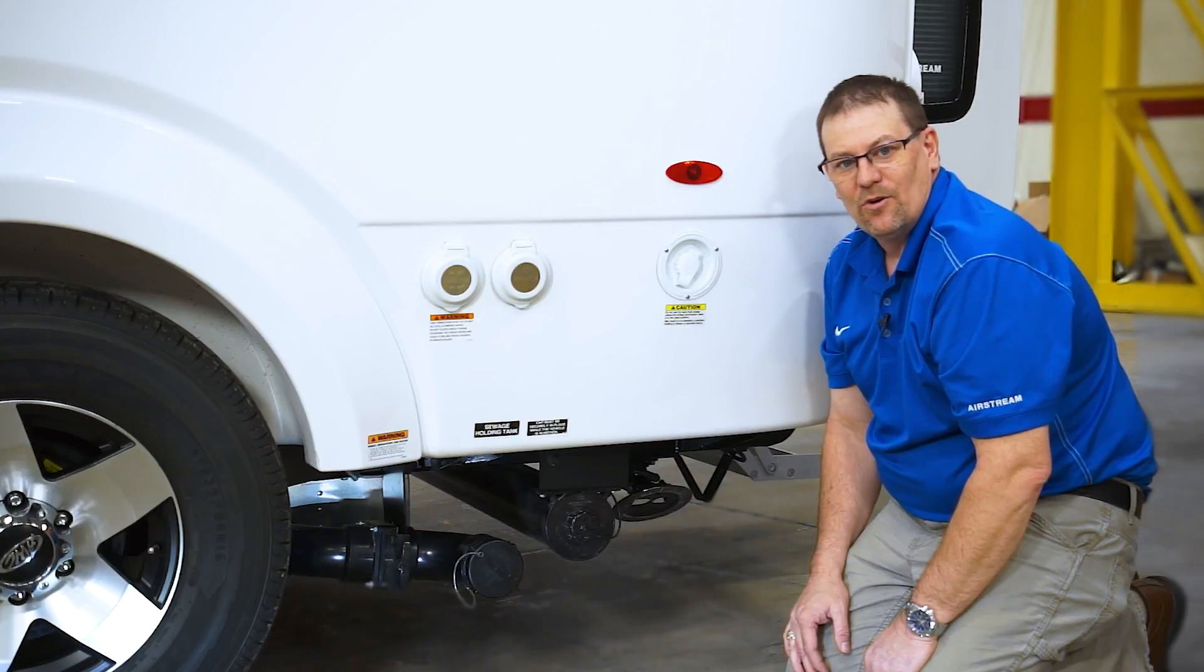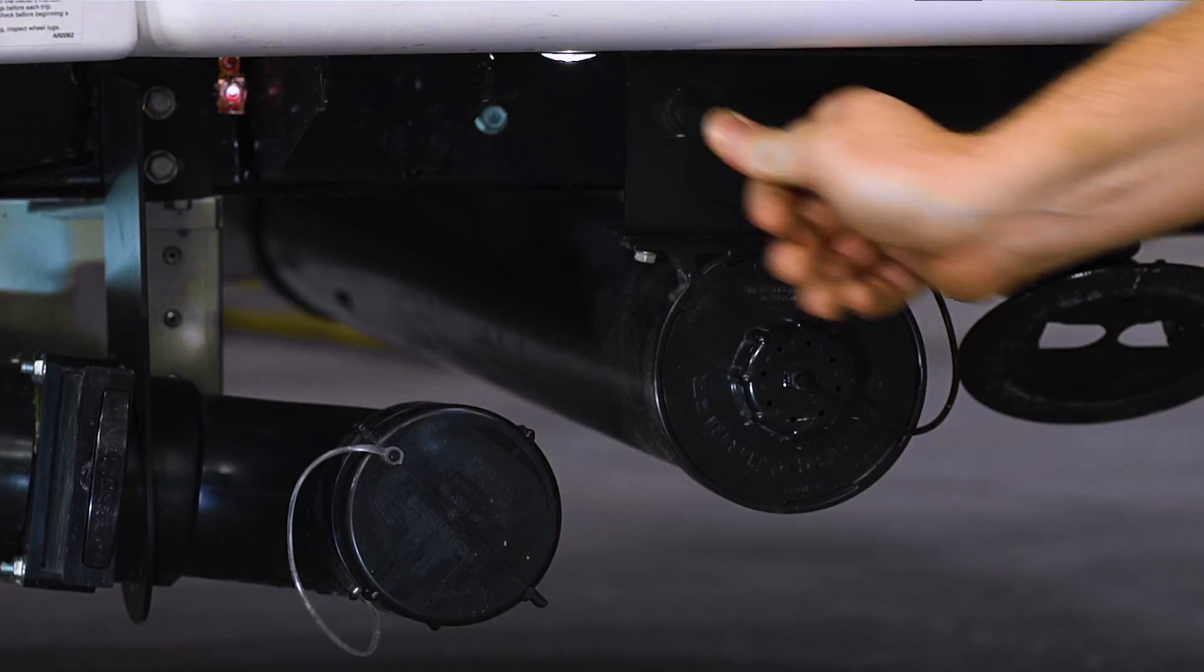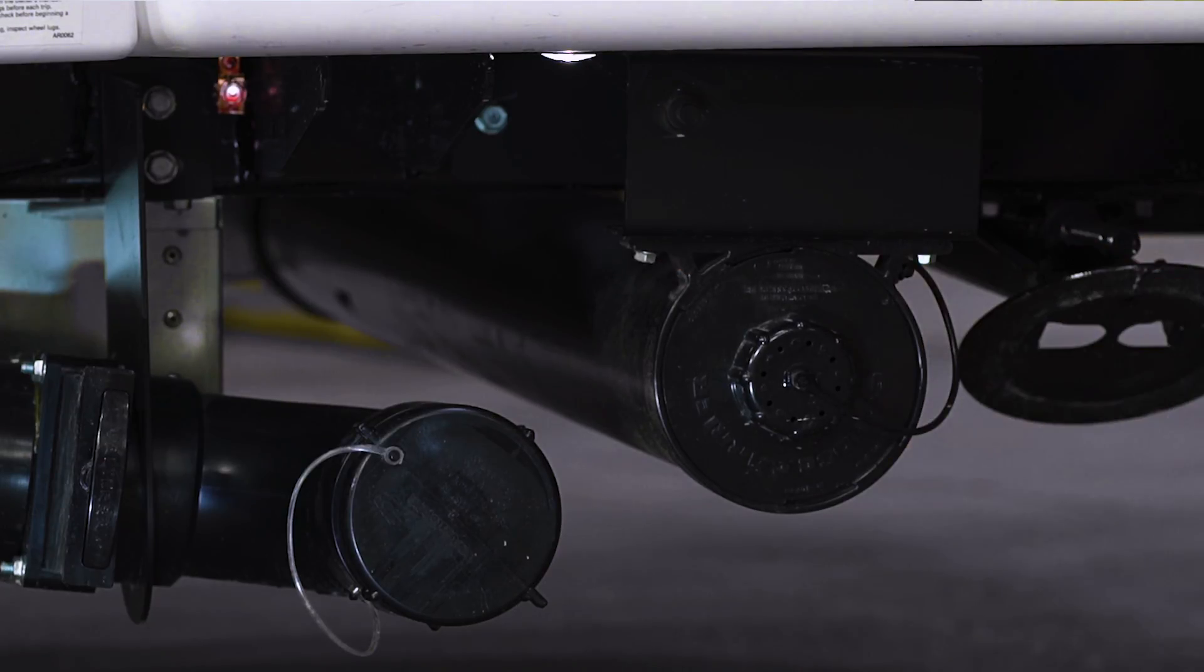The Nest has a light on the exterior down by the valves, so if it's dark out we can see what we're doing if we want to turn on the light. Now we have illumination here.